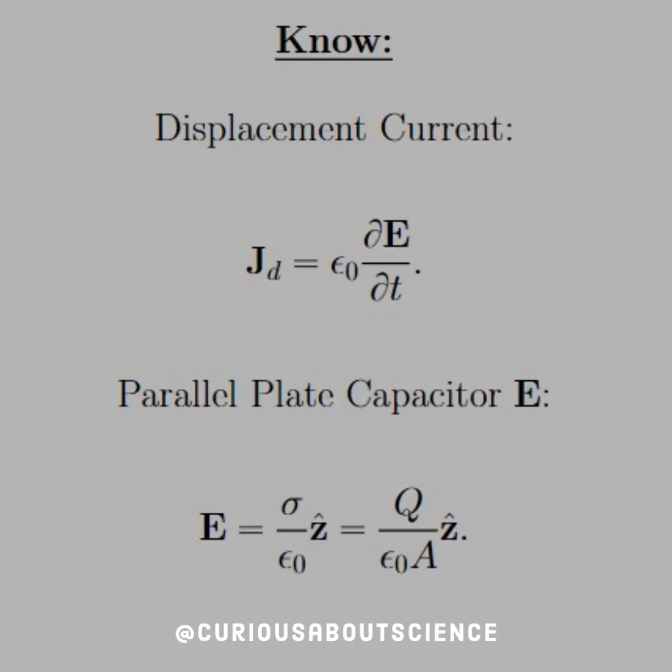So what we need to know is the displacement current, which is J_d. Maybe not the best name for this thing, but it is what it is for now. We'll see why later. But we see that that's equal to epsilon naught times the partial derivative of E with respect to t. And we know that for a parallel plate capacitor, the electric field is sigma, the surface charge (not conductivity, mind you), over epsilon naught in the z hat direction. But we know that the surface charge is Q divided by the area. We'll see that that comes in handy quite soon.